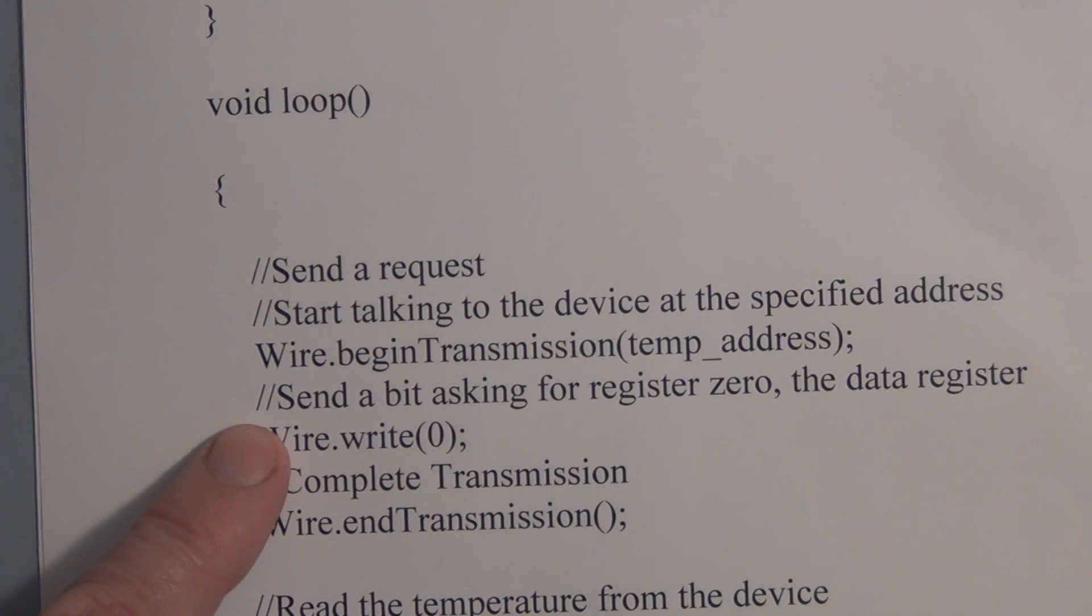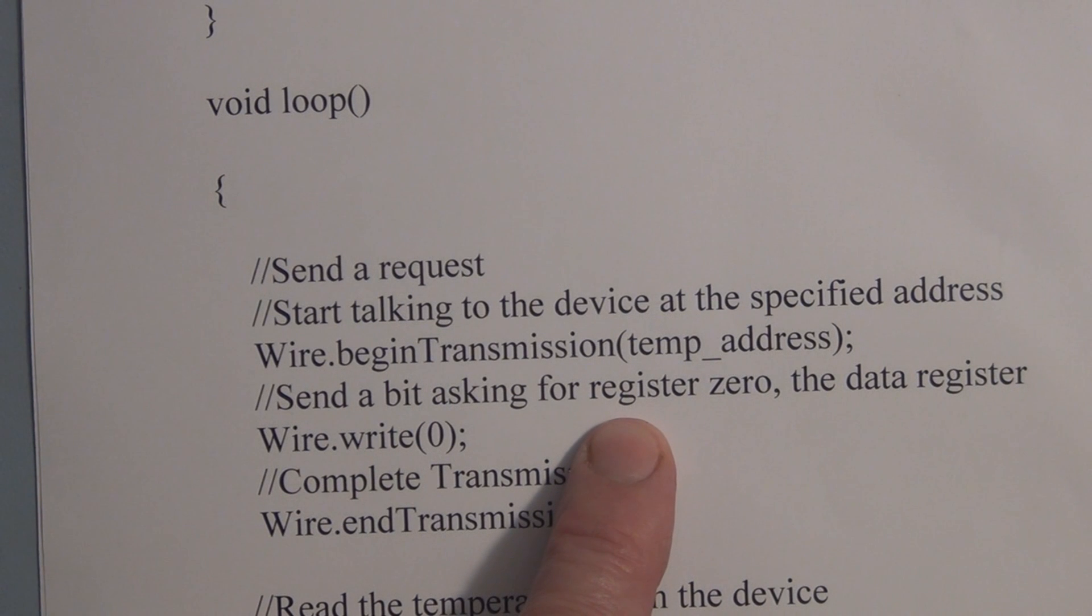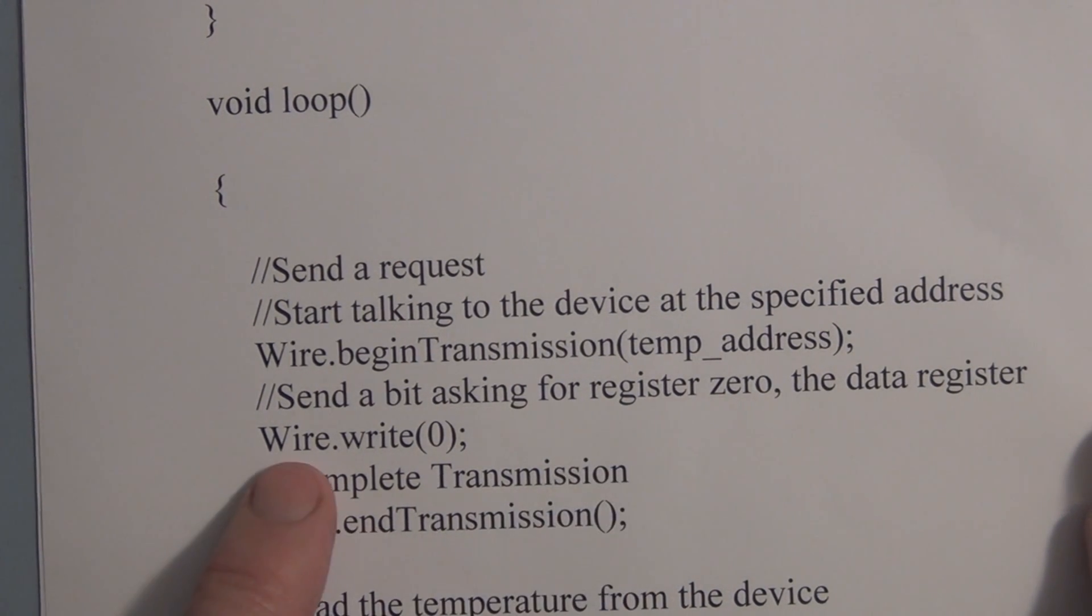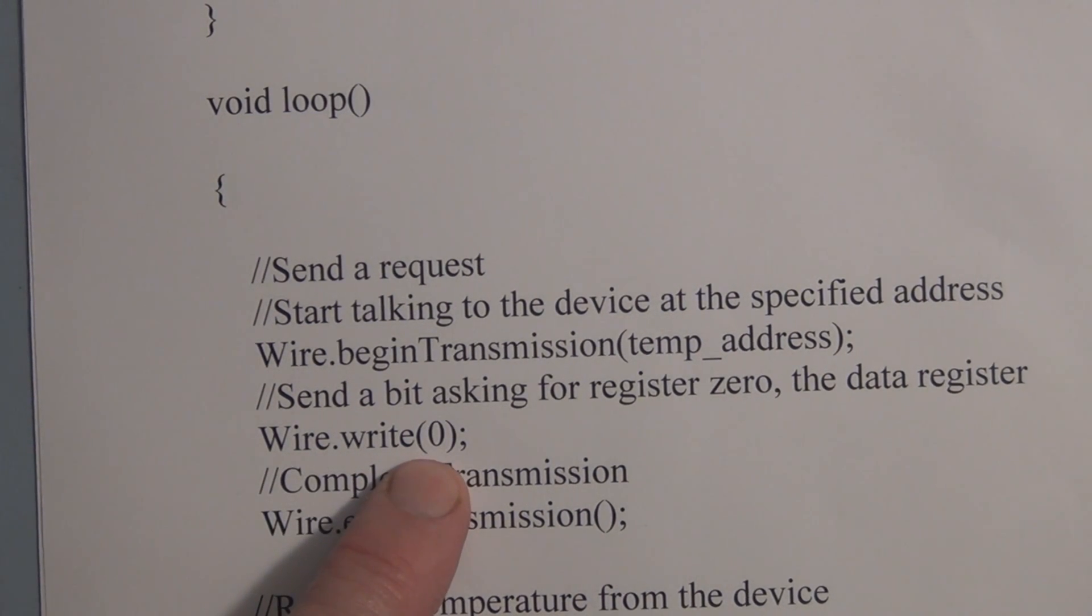Next thing is that we want to send a bit asking to look at register zero. Remember, there are two registers on this temperature sensor and register zero is where the temperature information is stored. So we have to send a bit asking for register zero, the data register. So we have to wire dot write. We have to write a zero to the slave. So now we're pointing at address or register zero.